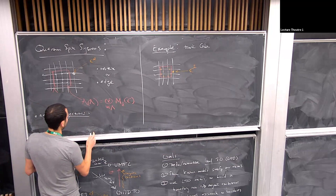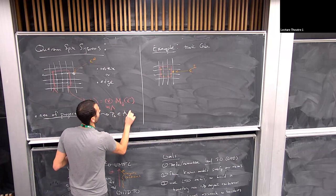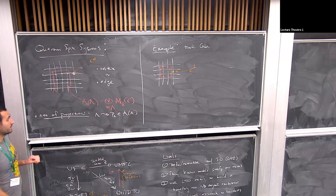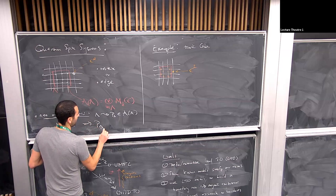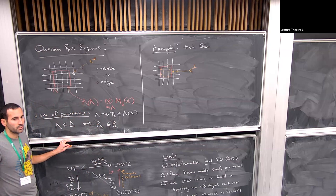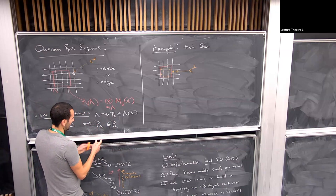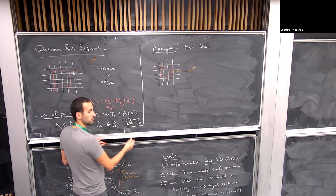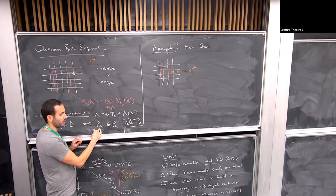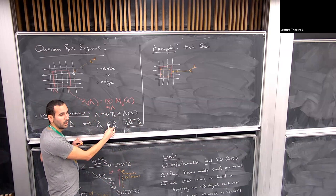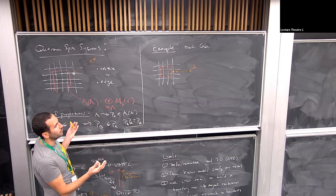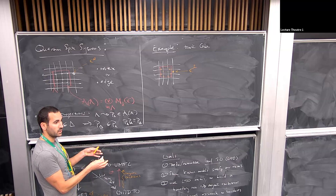This ordering of projections means P(delta)·P(lambda) = P(delta), i.e., P(delta) is a subprojection of P(lambda) — the image of P(delta) is contained in the image of P(lambda). If you're a physicist, think of a commuting projector, local frustration-free Hamiltonian, and take the local ground state space on that rectangle — that's the notion of local we're discussing.